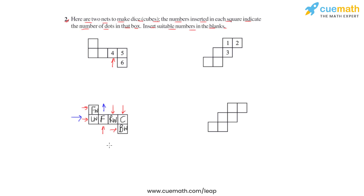We can now see how these faces form the cube with respect to the room we've taken as reference. The front wall is the opposite face of the back wall: the back wall square has six dots, so the front wall must have one dot to make a total of seven. Similarly, the left wall and right wall are opposite faces — the right wall has four dots, so the left wall has three. The floor and ceiling are opposite, making the floor face have two dots.